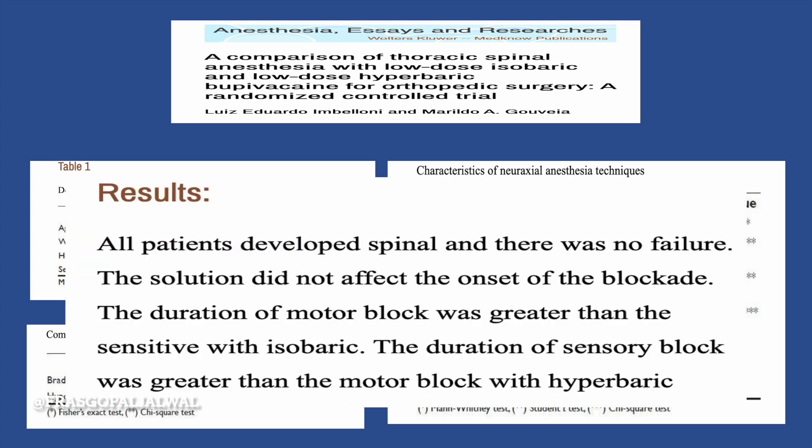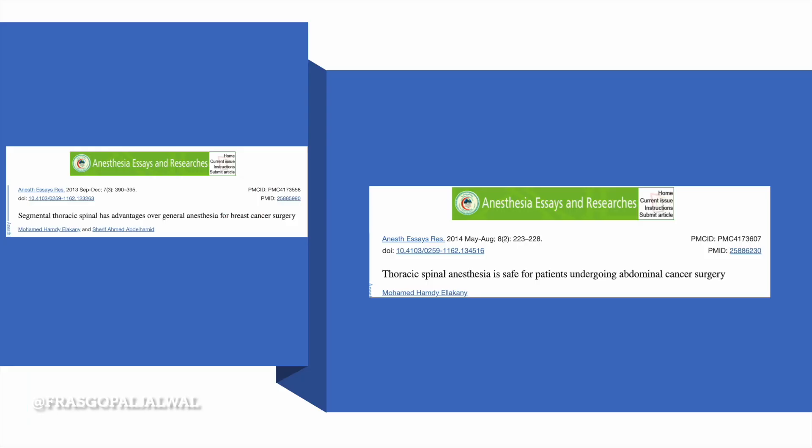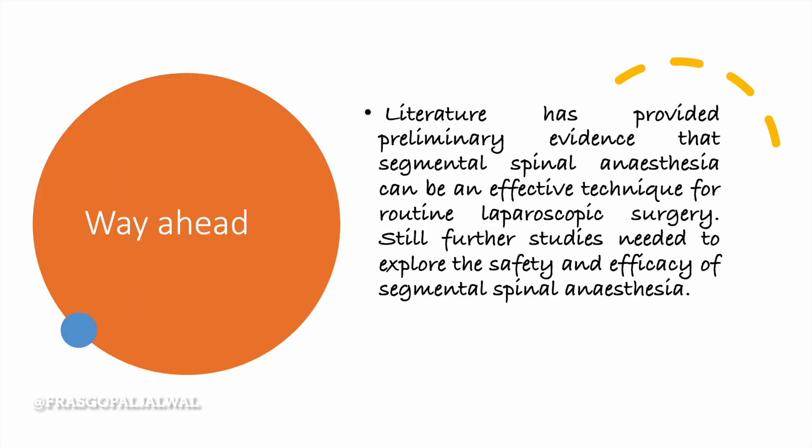All patients developed a spinal block with no failures. The solution type did not affect the onset of blockade. Duration of motor blockade was greater than sensory with isobaric, while duration of sensory block was greater than motor block with hyperbaric. Further studies also highlighted segmental spinal anesthesia as having advantages over general anesthesia for breast cancer surgery, and thoracic spinal anesthesia was shown to be safe for patients undergoing abdominal cancer surgery.